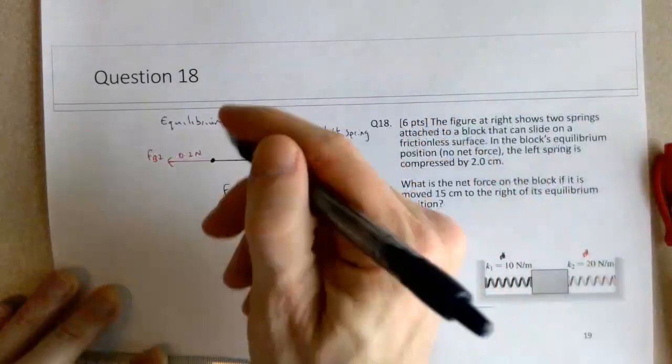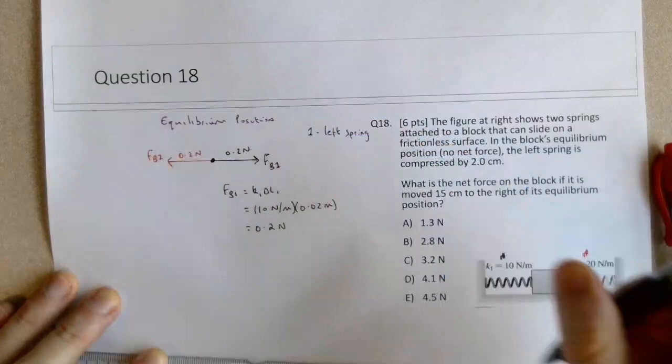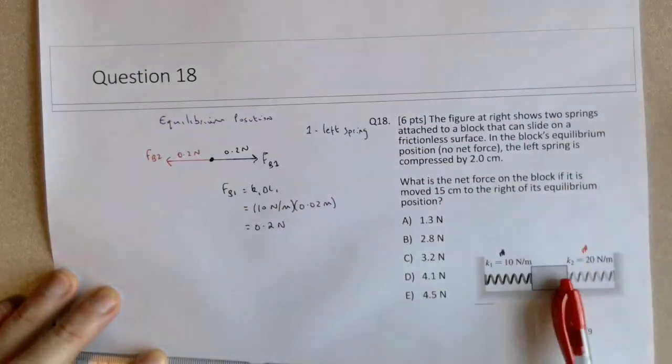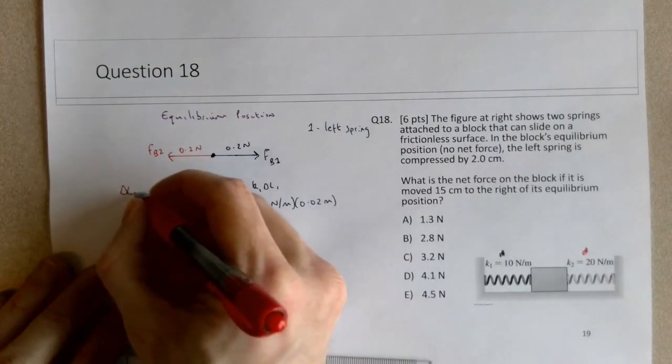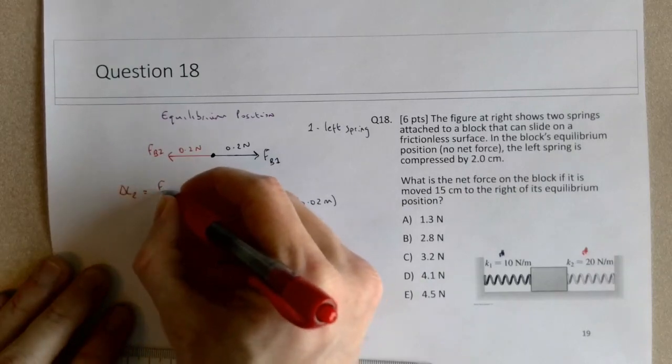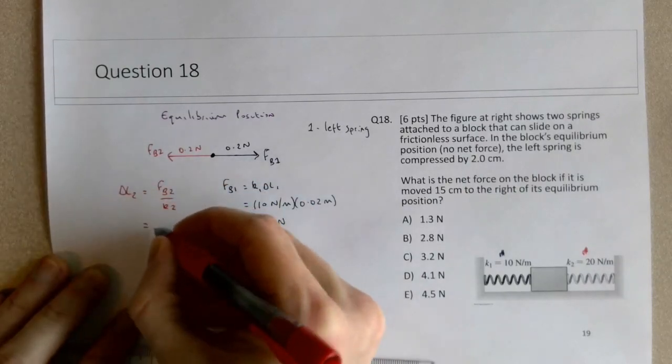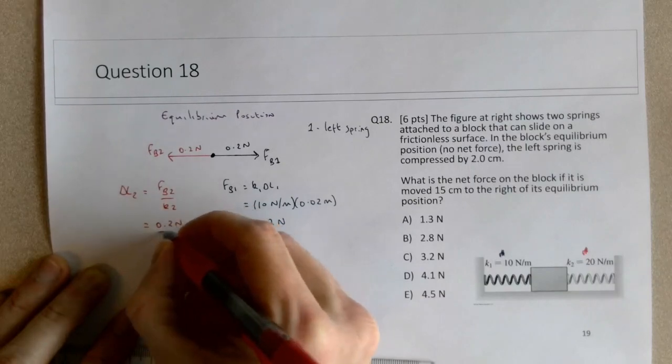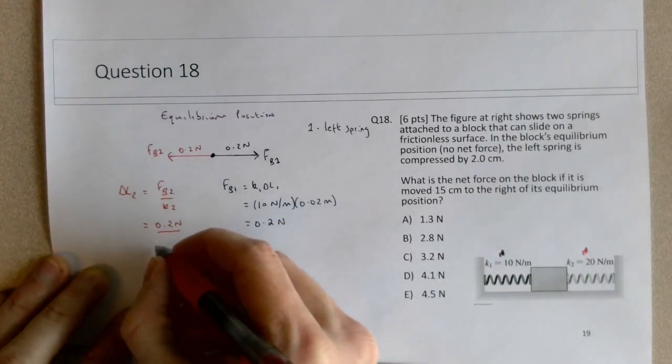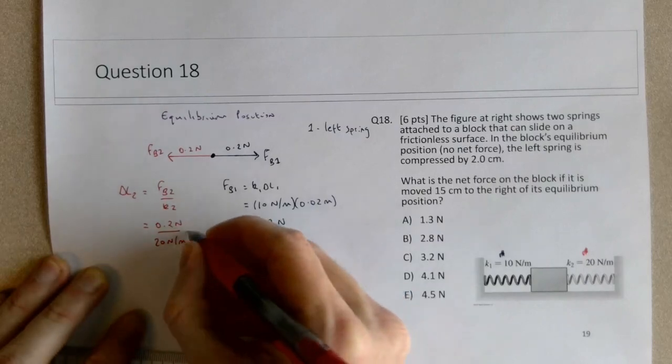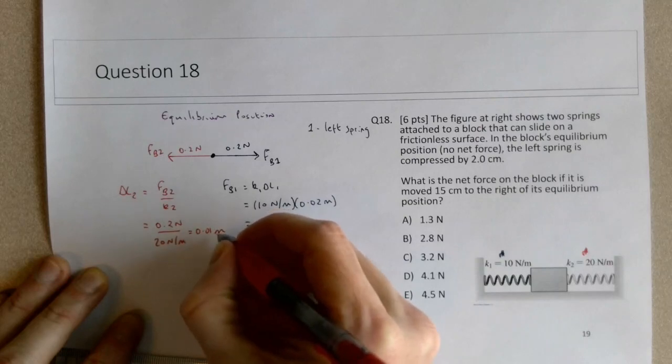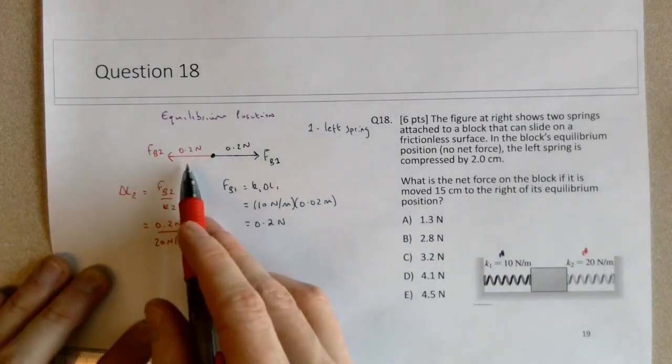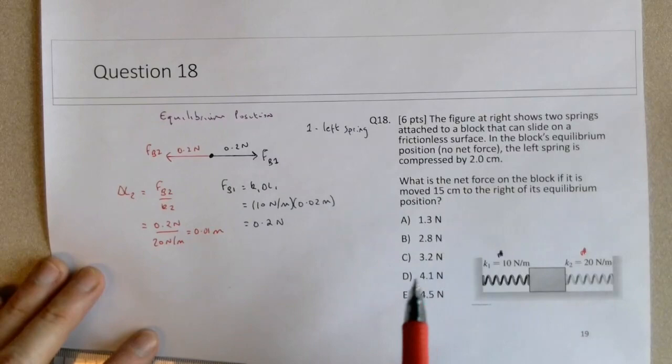So we can, knowing its spring constant and knowing the size of the force, we can figure out deltaL. So Fb2, deltaL2 would be Fb2 divided by K2. So that's 0.2 newtons divided by 20 newtons per meter. So that's only 0.01 meters. So this spring would be compressed at 1 centimeter.